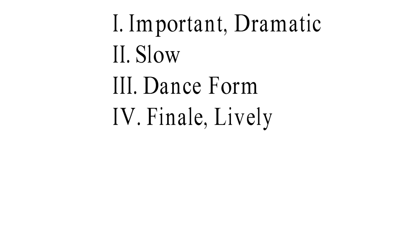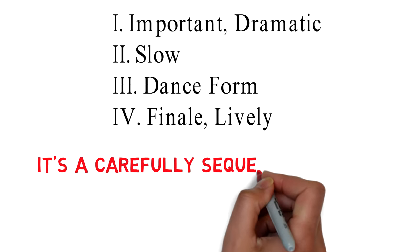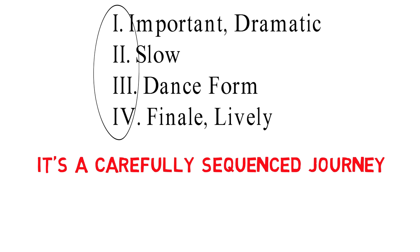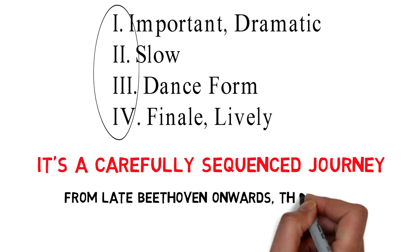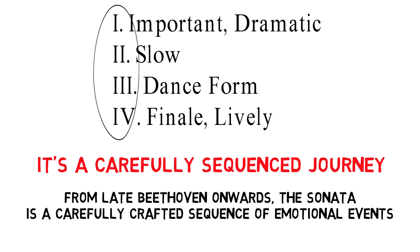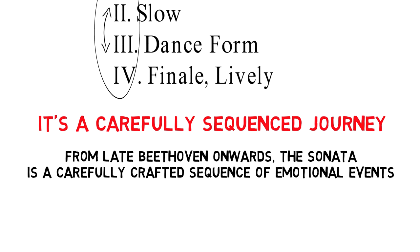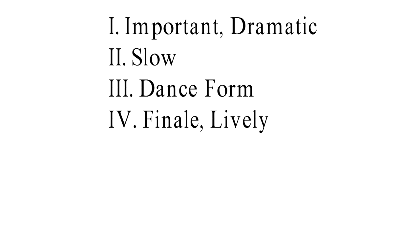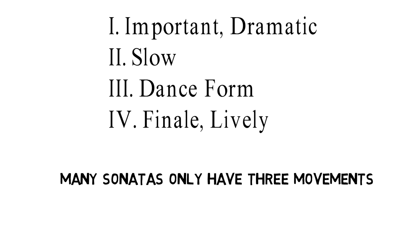They're not just writing one five-minute piece which expresses one emotion — they're taking you on a journey which has been carefully sequenced to take you through all these emotional states before the final payoff, a bit like a well-crafted film. This is especially the case from late Beethoven onwards. Whereas Haydn and Mozart are closer to expert craftsmen with their sonatas, late Beethoven really gives us a carefully crafted sequence of emotional events. The slow movement and minuet sometimes switch places if the composer thinks that'll make the sequence more dramatic. Many piano sonatas, chamber sonatas and concertos only have three movements because they often exclude the dance movement — the dramatic first movement, slow middle movement and lively finale provide enough great material on their own.